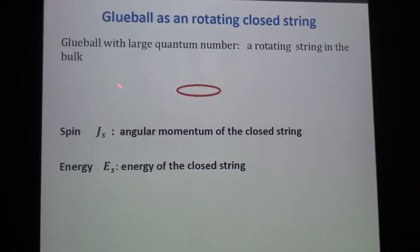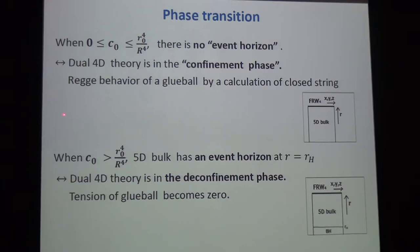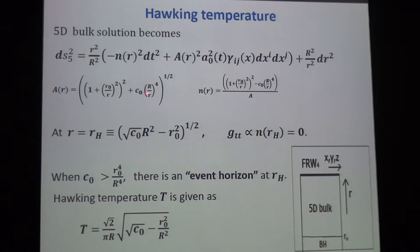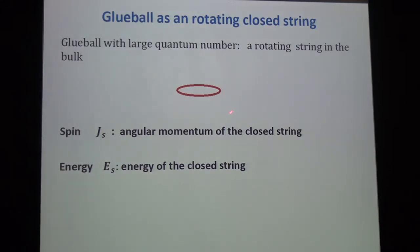I didn't understand your confinement phase. Something shrinks to zero, some cycle? For example, when I consider a Wilson loop by an open string, U-shaped open string, actually this has a linear potential. In the geometry, R goes all the way down to zero, even in the confined phase. There is no horizon. It's not like AdS soliton.